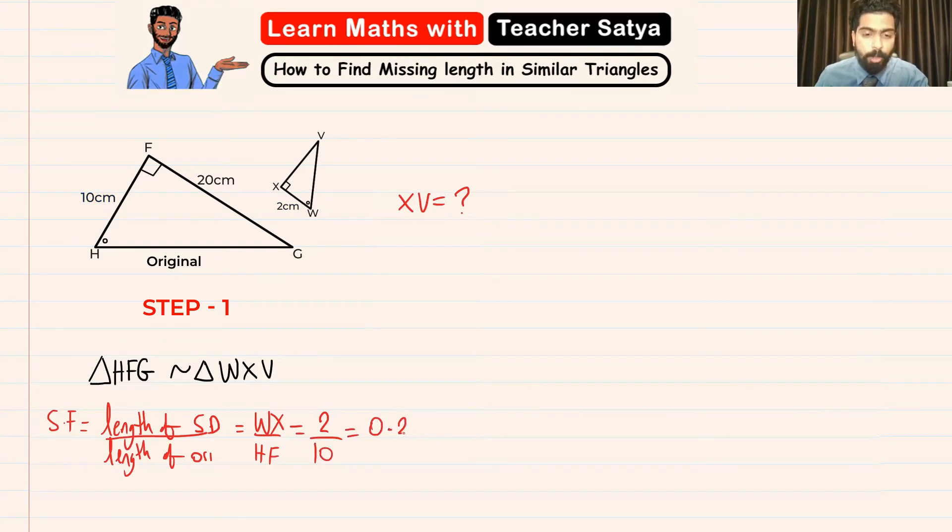That means the scale factor is 0.2. In other words, we can say that triangle WXV has become 0.2 times the size of triangle HFG. Now in order for us to find the length of XV, first we are going to find its matching side.